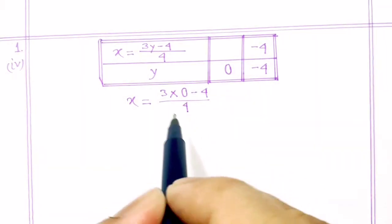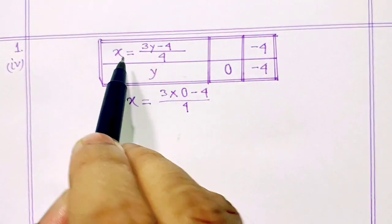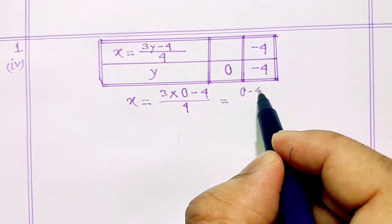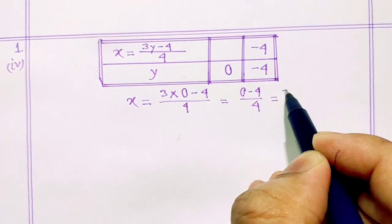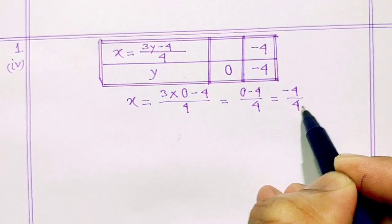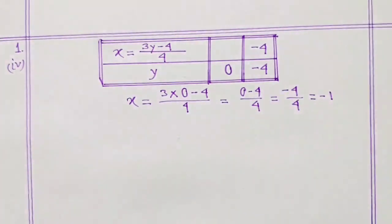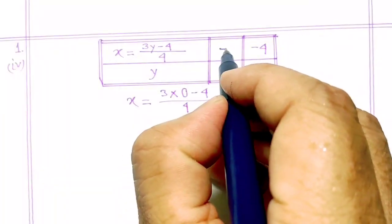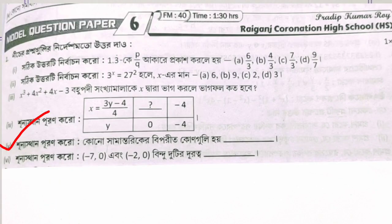...equal 0 minus 4 divided by 4, equal minus 1. So the answer is minus 1. Now write the fifth problem and fill in the blank.